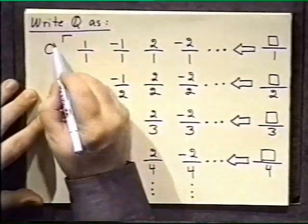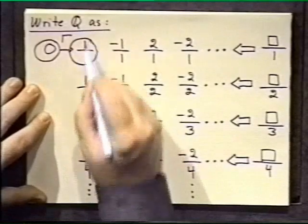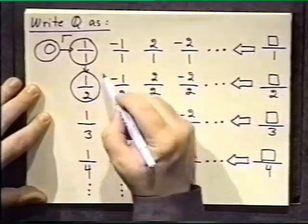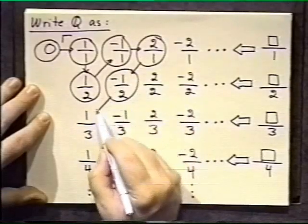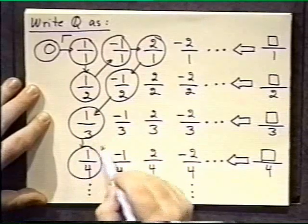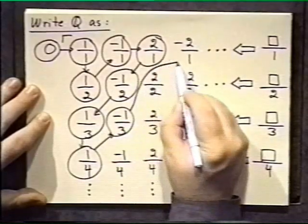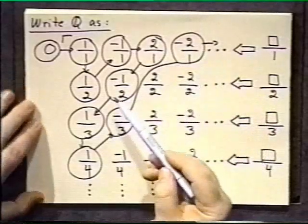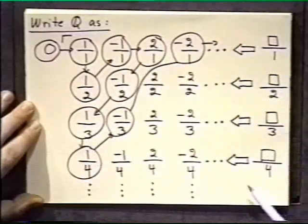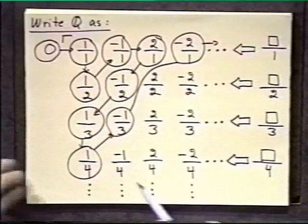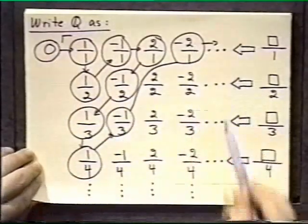Now how will I actually count this to show that there are the same number of elements here as the natural numbers? I will start here — this will correspond to 1 in the natural numbers — and then I will go in this fashion: come down, pick up this one, go back up, pick up this one, go over, pick up this one, come down to 1 fourth, start back up to minus 1 third, and if the next one is a repeat I will go around it and continue on. I am doing a zig-zag up and down through this corner of the rectangle, and by doing this I will eventually get all of the rational numbers. That is the process by which I relate Q to 1, 2, 3, 4, 5, 6, 7, 8, 9, 10, etc. — the natural numbers.